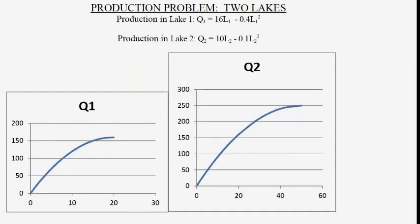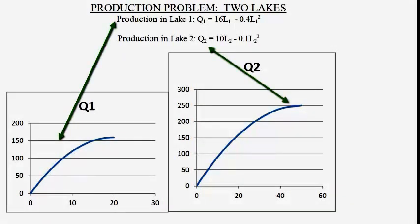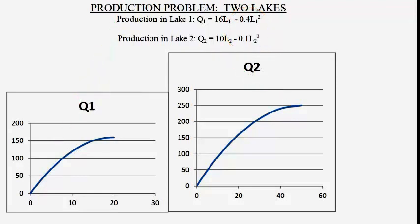We can sketch the production functions Q against L and we can see that we have quadratic functions. The minus term shows us that we are increasing at a decreasing rate and eventually we are going to max out the production functions. If we want to maximize total production, we want to get to the top of each of these two production functions. We observe the point where the slope is zero — that's where the maximum is. The first derivative set equal to zero determines the maximum for each function.